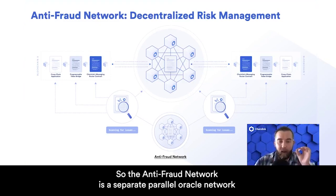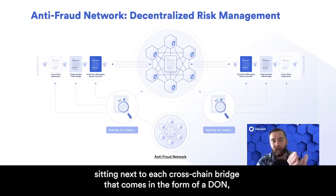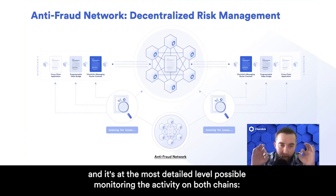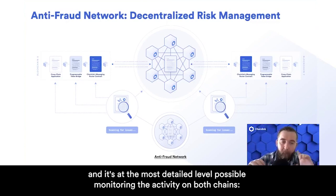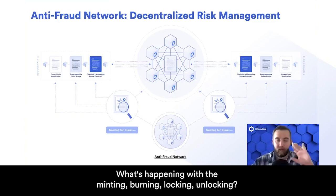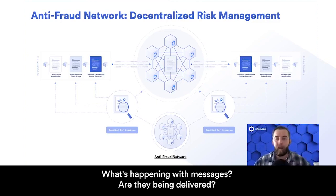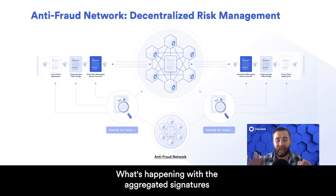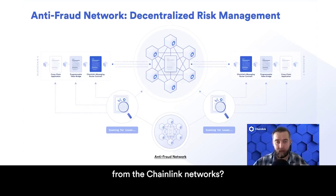The anti-fraud network is a separate parallel Oracle network sitting next to each cross-chain bridge that comes in the form of a DAWN, and it's at the most detailed level possible monitoring the activity on both chains — what's happening with the minting, burning, locking, unlocking, what's happening with messages, are they being delivered, and what's happening with the aggregated signatures from the Chainlink networks.